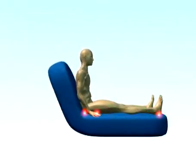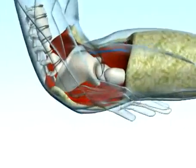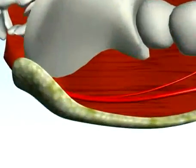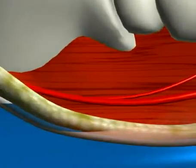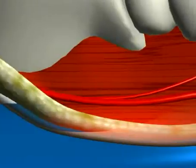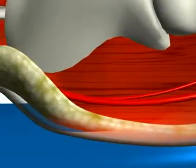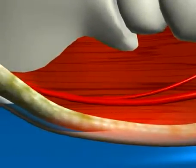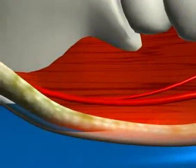When a patient is sitting, the effect of gravity is to pull the patient downwards. The skin does not move because of the resistance generated by the bed surface. However, the skeleton and deep fascia slide downwards and distort the soft tissues beneath the skin. This is known as shear.